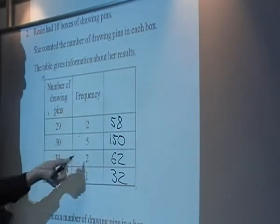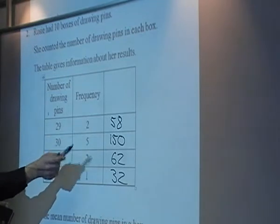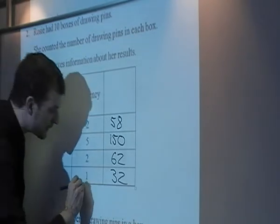Then what you have to do, find the total frequency. So you have 2 plus 5 plus 2 plus 1 gives me 10.